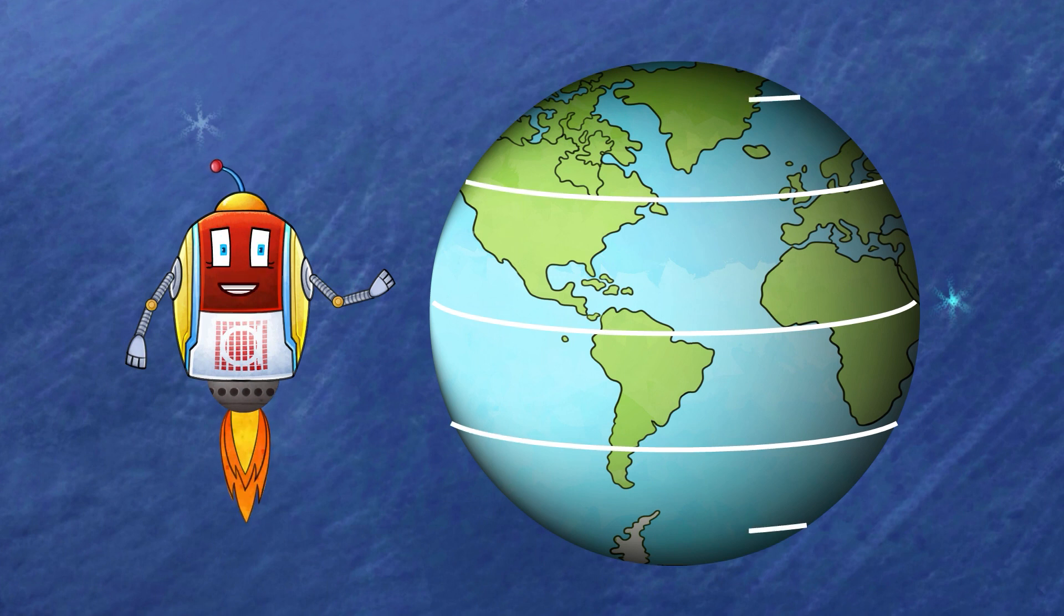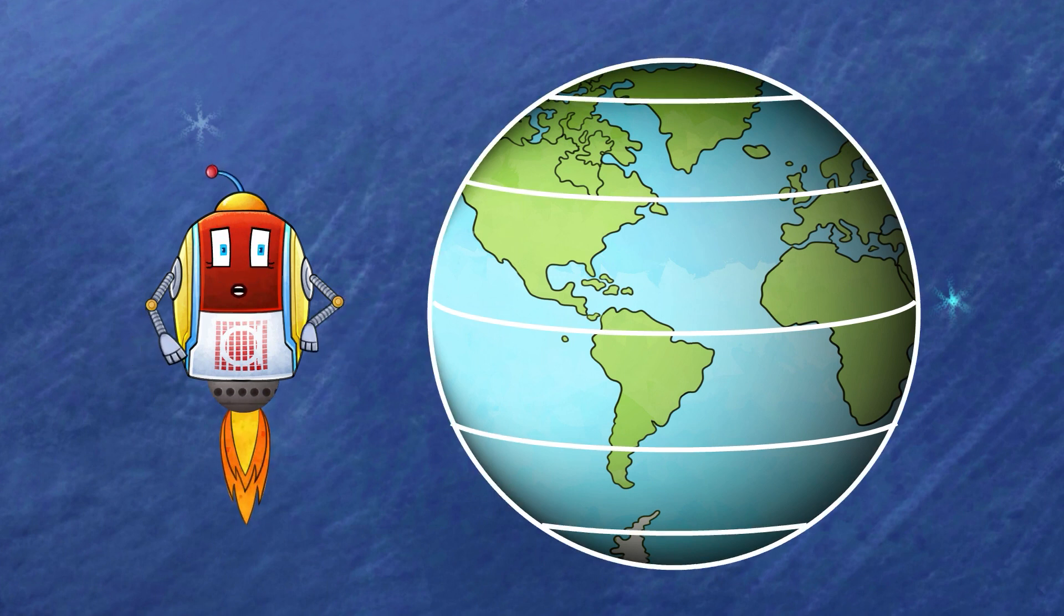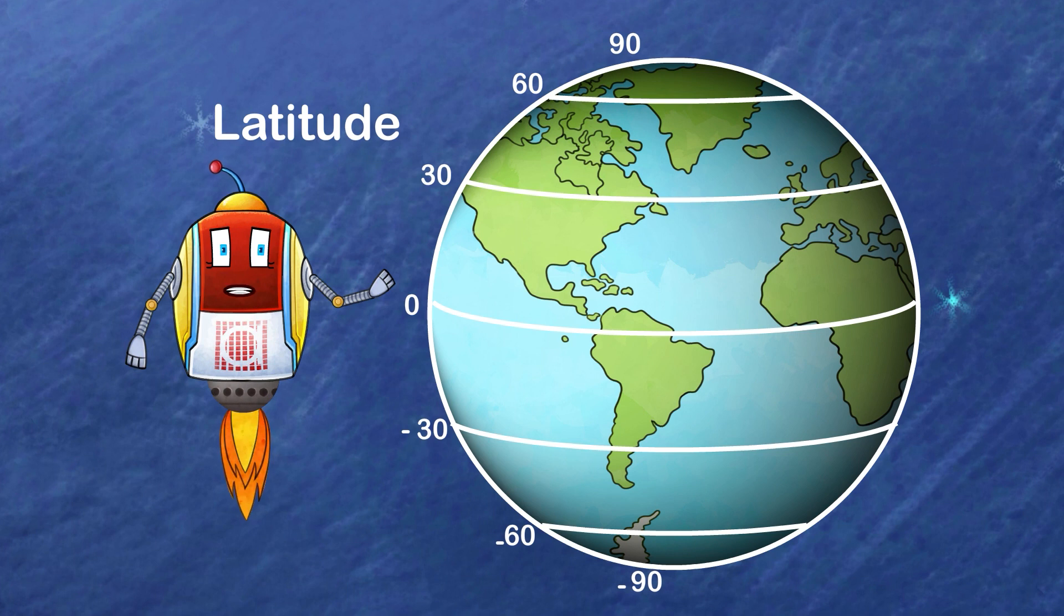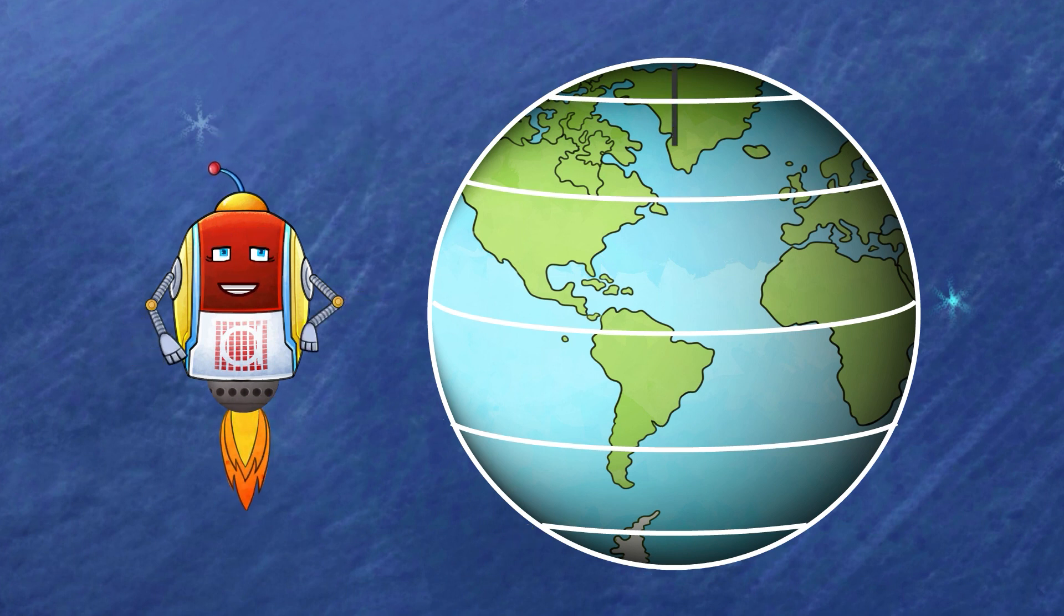Now let's talk about the second set of lines. These lines run from side to side, like a belt around the Earth. We call them latitude. Latitude lines help us know where we are from north to south.